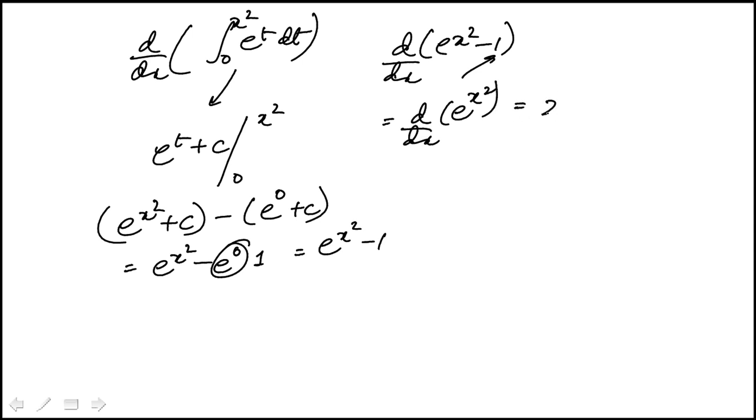And that would be equal to 2x times, because derivative of x squared is 2x. And derivative of e to the power is just the same expression again. So that's the answer, which is choice C. Thank you.